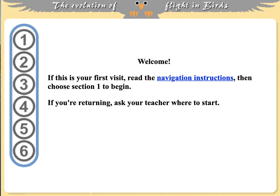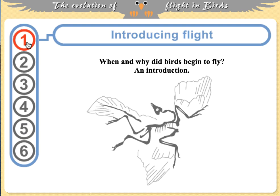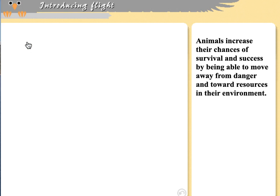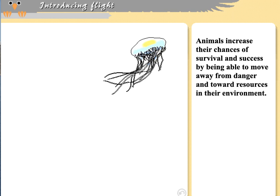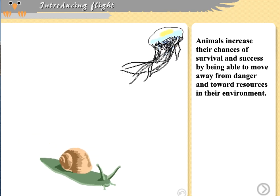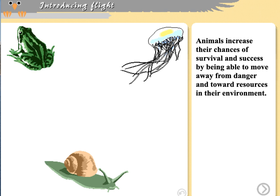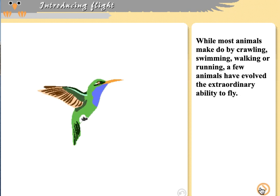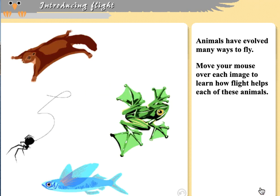Welcome to this run-through of the evolution of flight in birds. We're thinking about how animals survive and evolve, and how birds are a little bit different. Obviously birds are all about flight — it gets them from one place to another. That doesn't mean there aren't some flightless birds, but we're going to focus on flight today and think about how organisms fly.